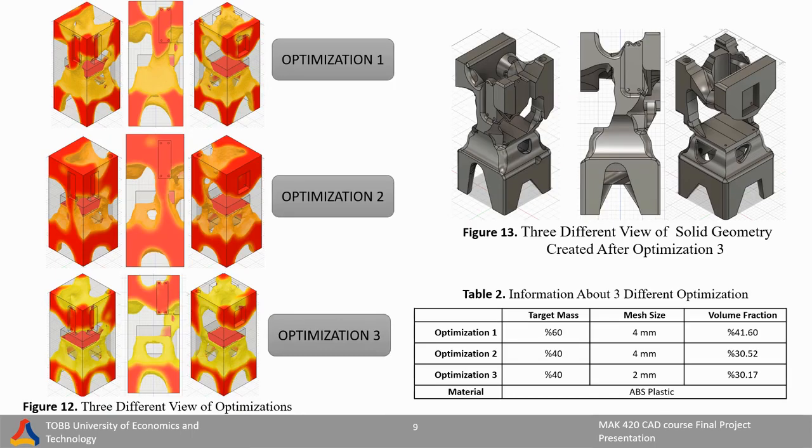Then, three different topology optimizations were performed to determine the appropriate target mass and mesh size. Table 2 shows the mesh size, target mass, mesh ratio values, and material of the optimizations. Firstly, different target masses were compared. As clearly seen in Figure 12, more material is discharged when the target mass is 40 than when the target mass is 60. However, the integrity is still preserved. Considering the cabling of the Avionic systems, the case with a target mass of 40 was preferred since both the integrity was preserved and there was more free space.